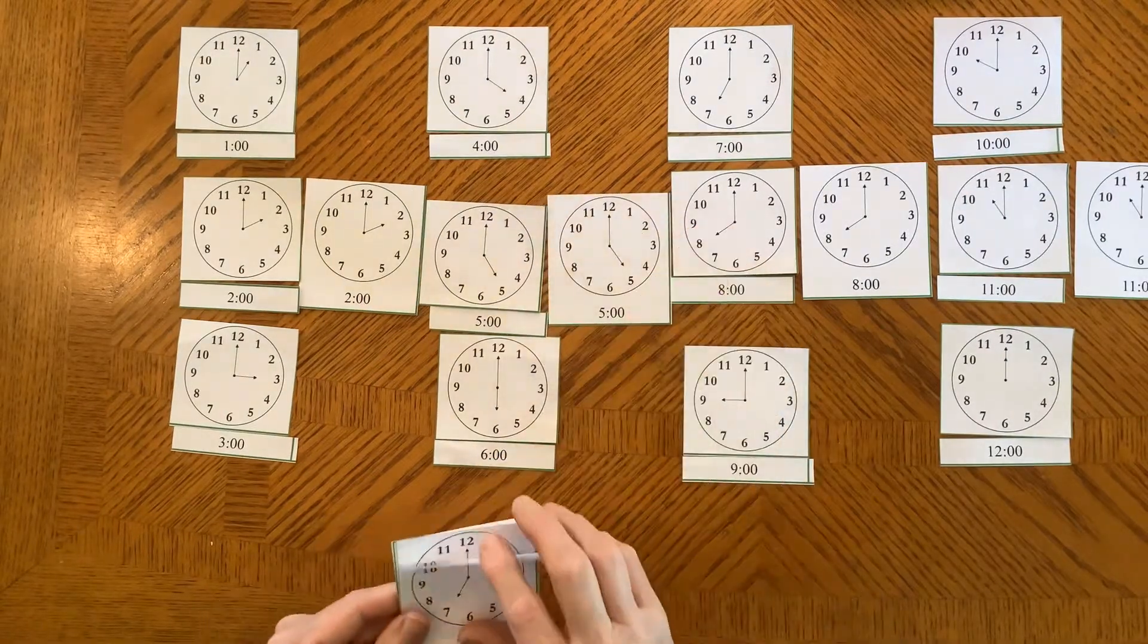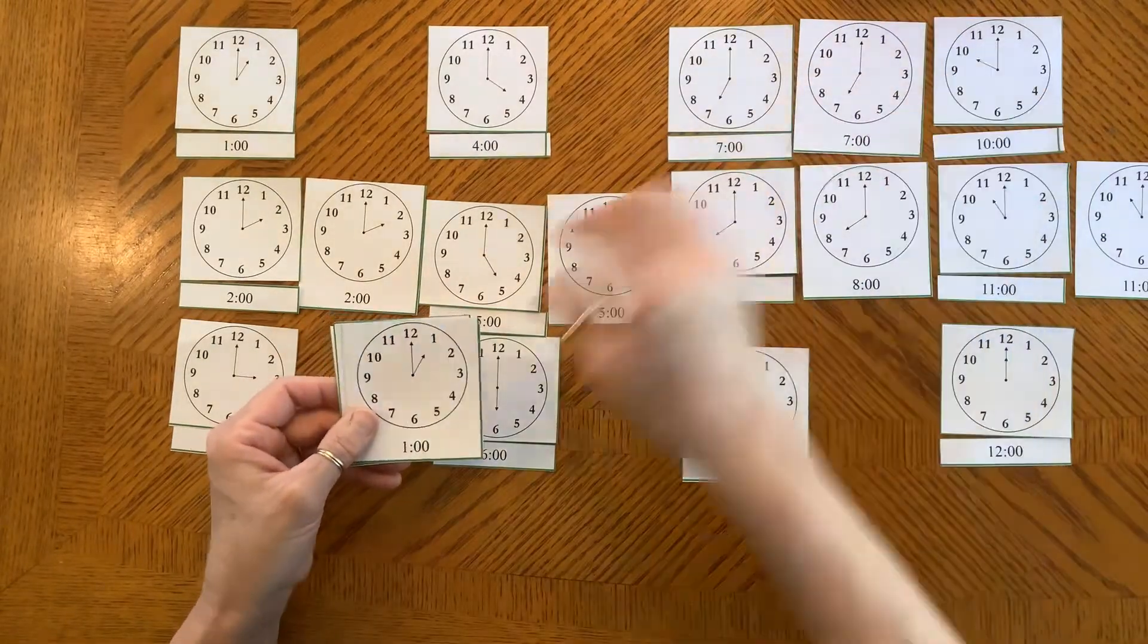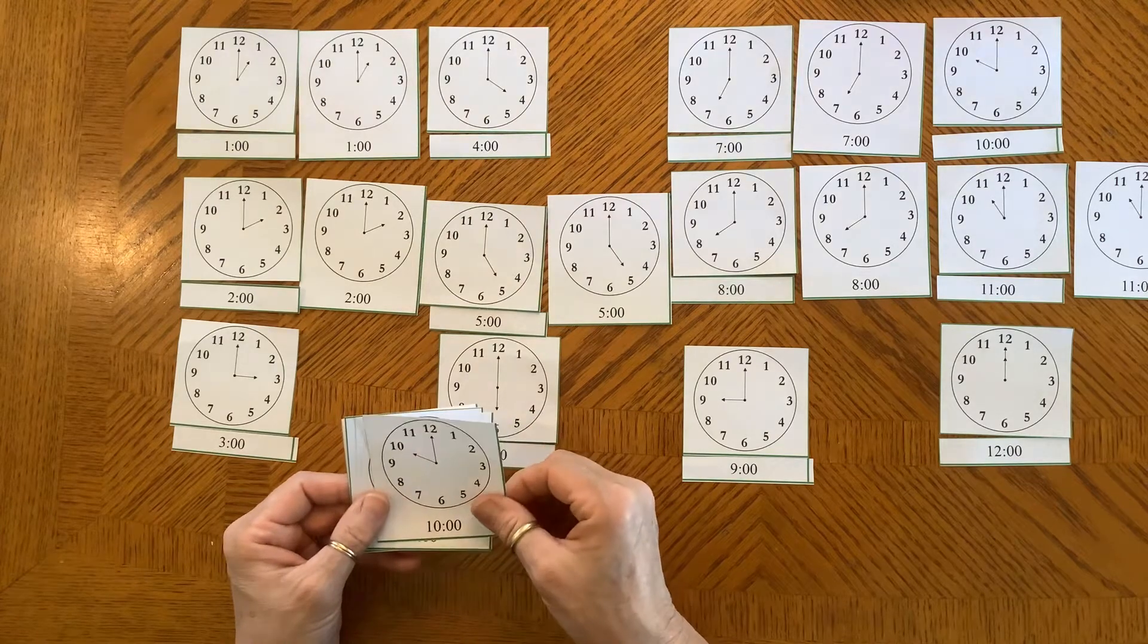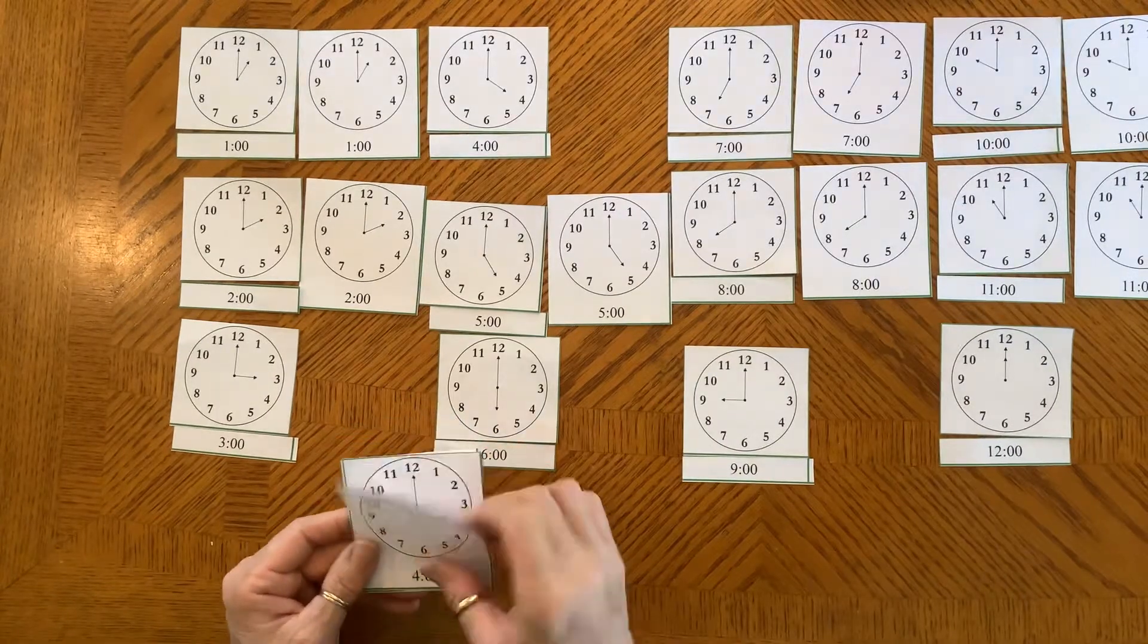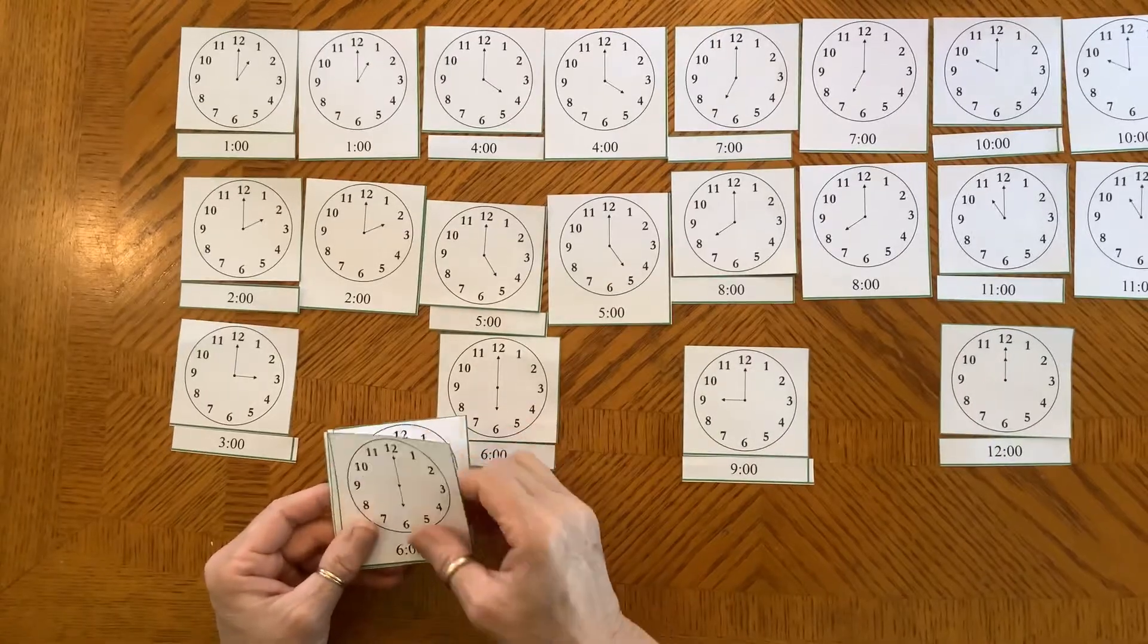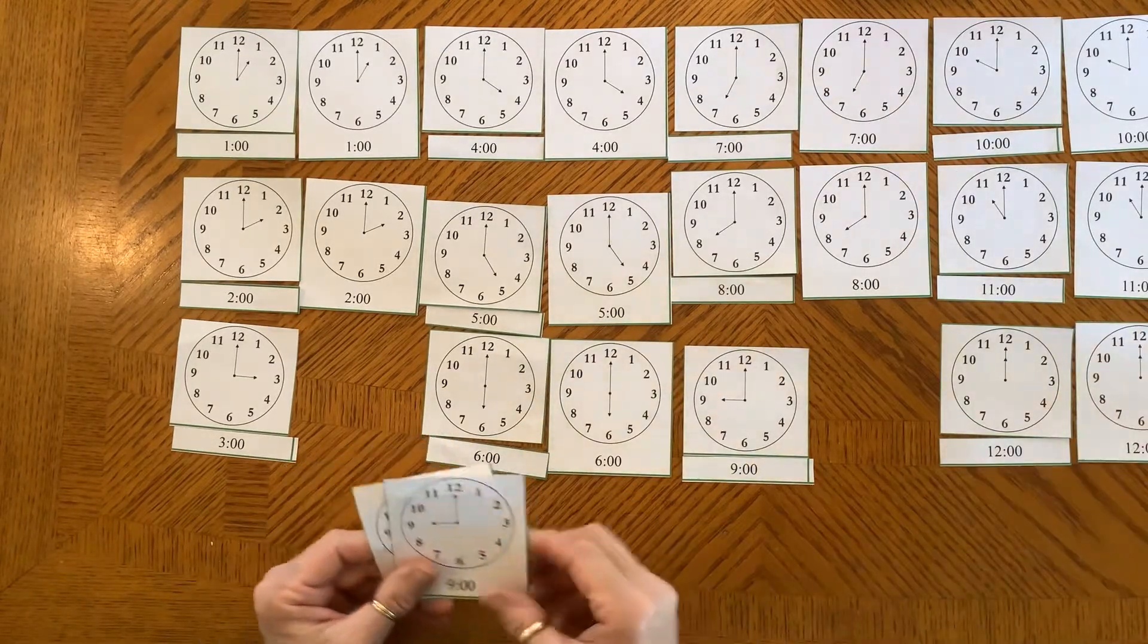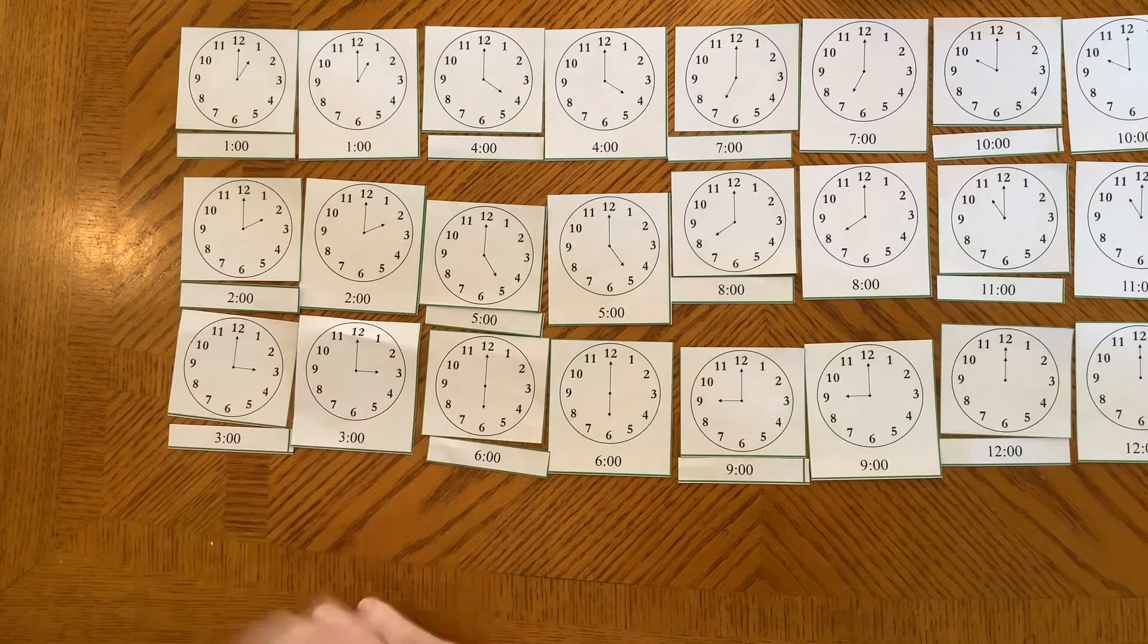Five o'clock is correct. Seven o'clock is correct. One o'clock is correct. Ten o'clock is correct. Four o'clock. Correct. Six o'clock. Twelve o'clock. Nine o'clock. And three o'clock. All right.